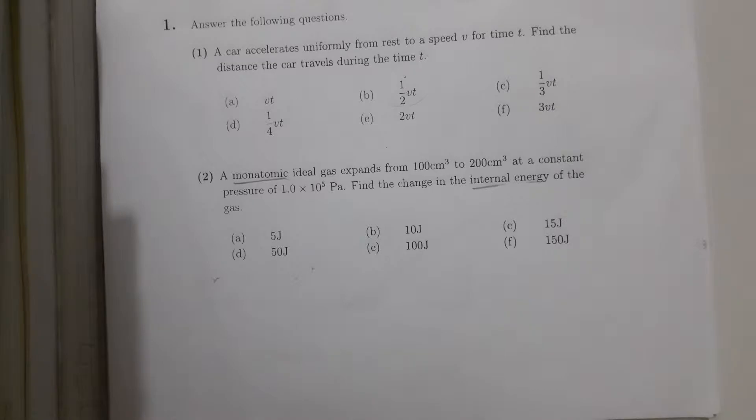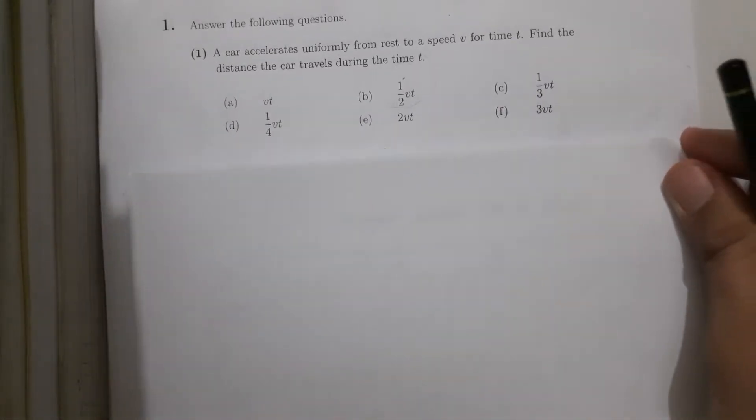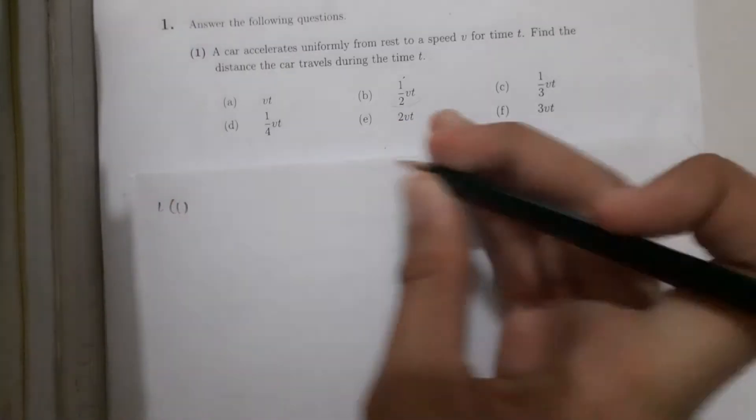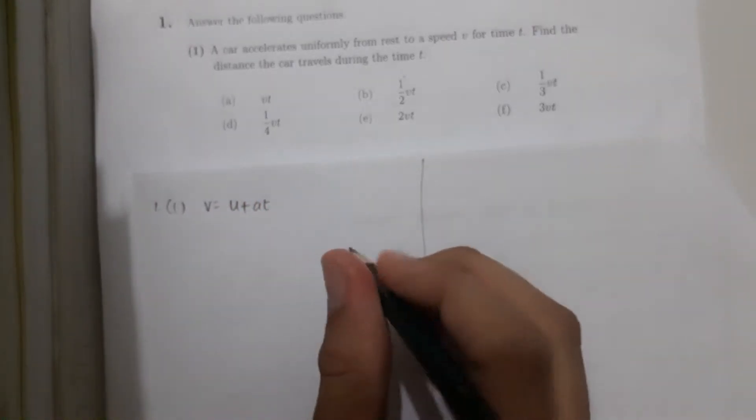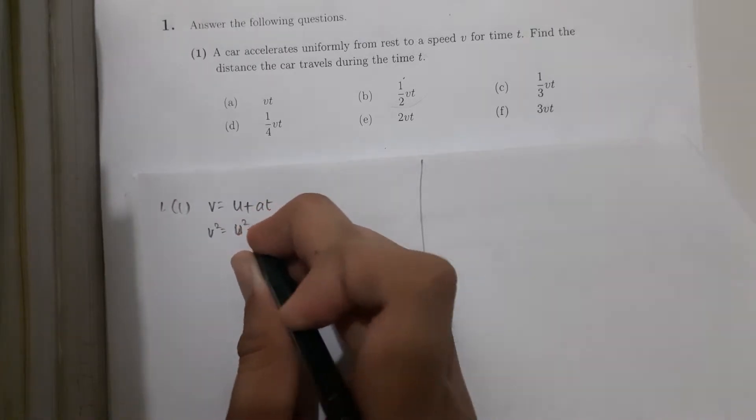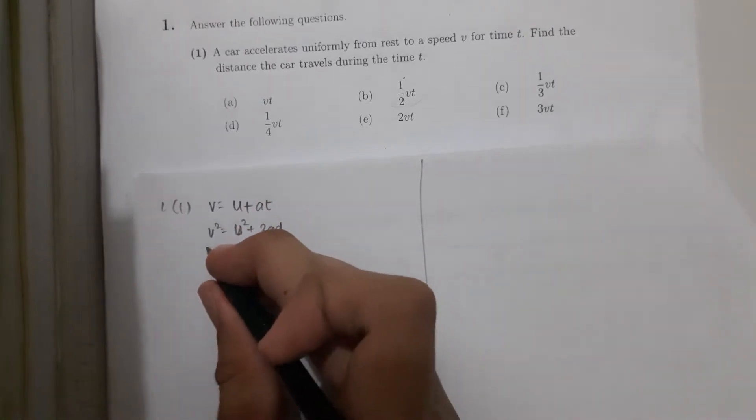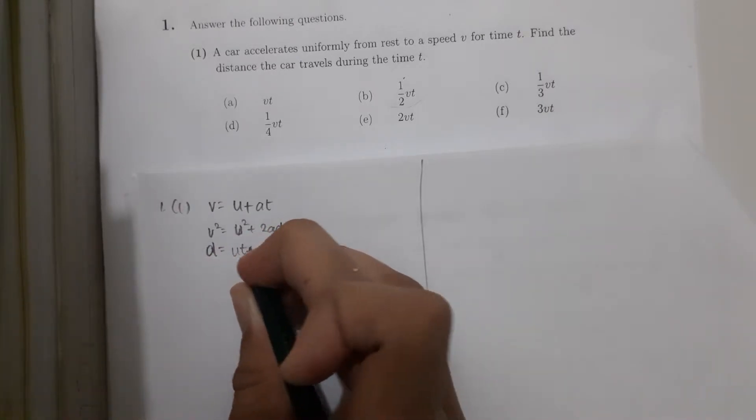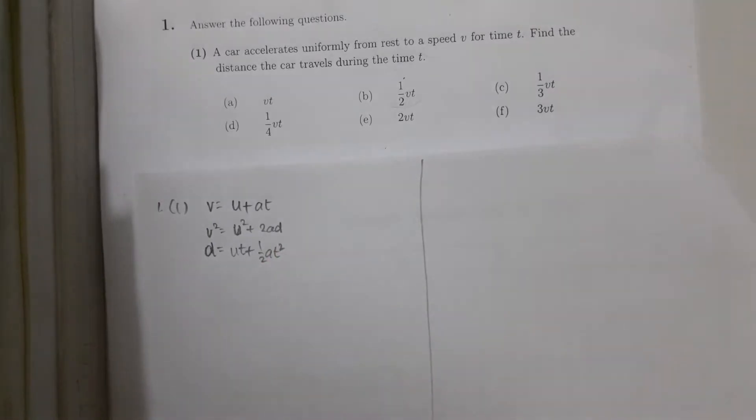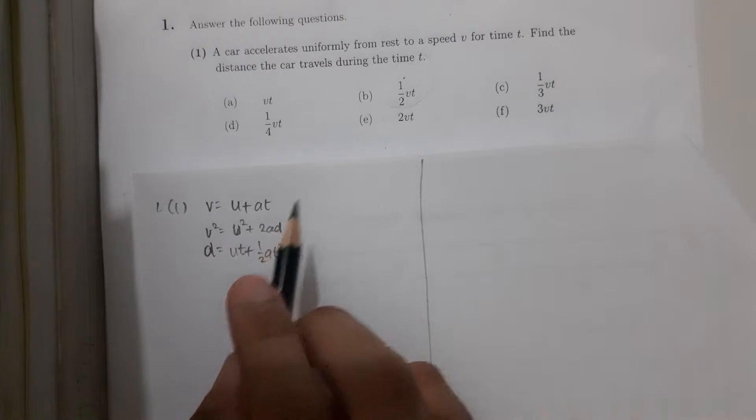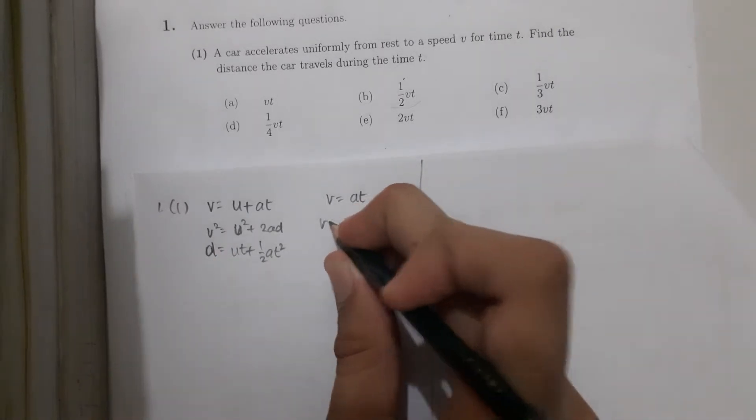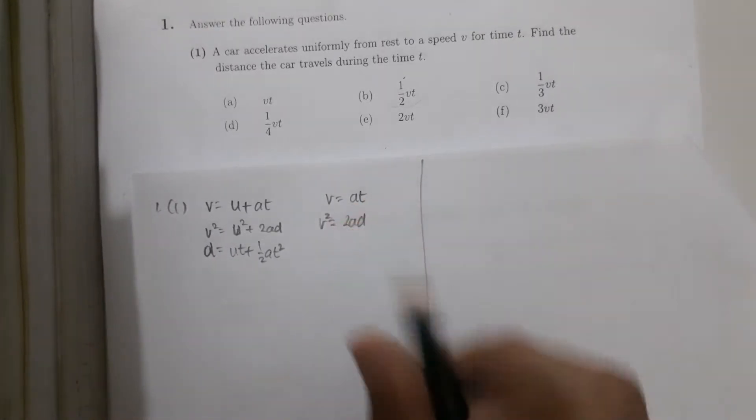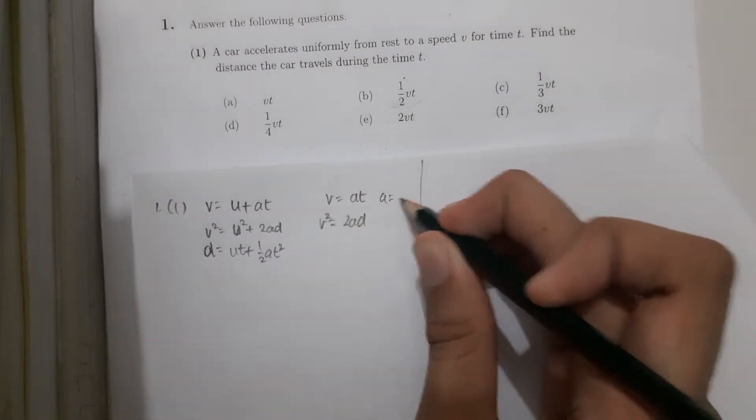Let me do this. The basic formula for kinematics is v equals u plus at, and v squared equals u squared plus 2ad, and d equals ut plus half at squared. Now, a car accelerates uniformly from rest, meaning that u is 0. So v equals at, and v squared equals 2ad.